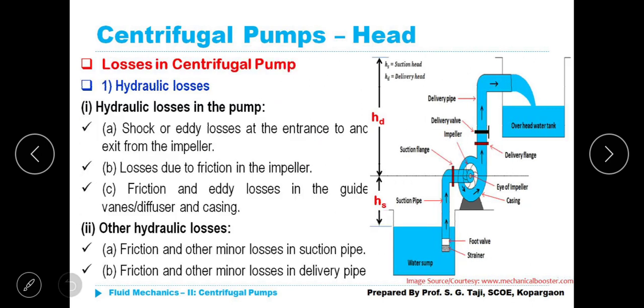Losses in centrifugal pump. What are the various losses that could take place? Though the centrifugal pump is designed very properly and manufactured, when it is put in use, the efficiency cannot be obtained 100%. It will be maximum up to 95%. Sometimes it may decrease to 70% also if losses are more. There are different types of losses. Hydraulic losses, mechanical losses, volumetric losses.